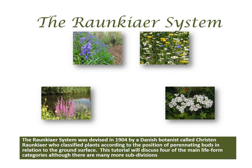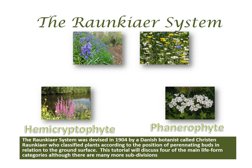The Raunkiær system was devised in 1904 by a Danish botanist called Christen Raunkiær, who classified plants according to the position of perennating buds in relation to the ground surface. This tutorial will discuss four of the main lifeform categories, although there are many more subdivisions.